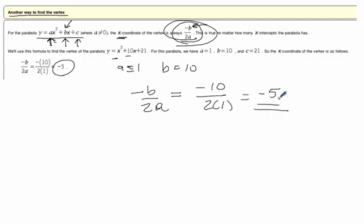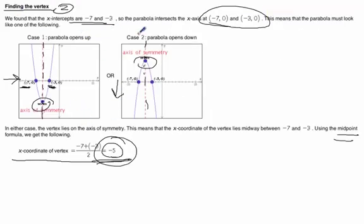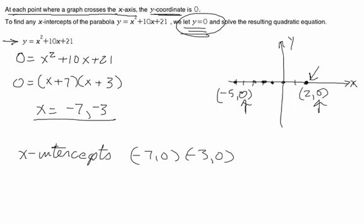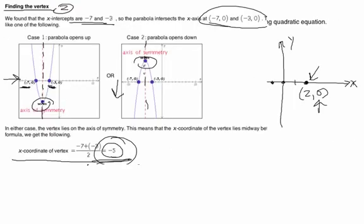So, that's just the x-coordinate of the vertex. Now, we've got to find the y-coordinate. So, that means that we can take this x equals negative 5 and plug it into our original equation, which is, let's go back here. What is our original equation? It's x² + 10x + 21.